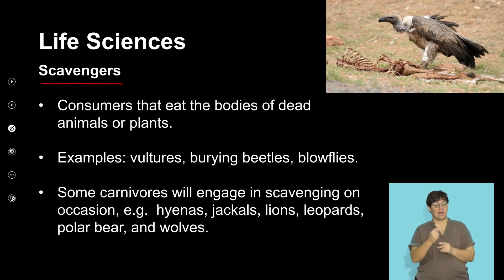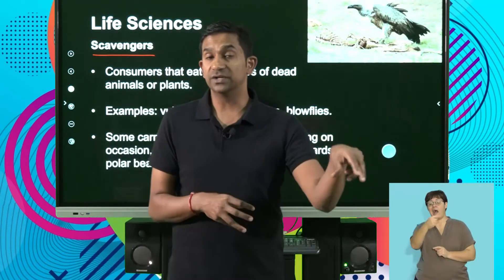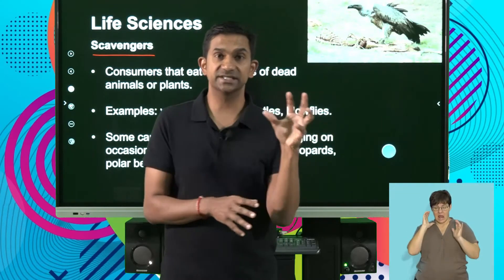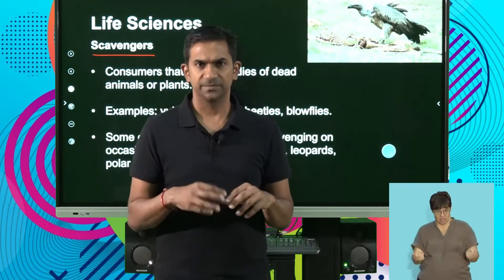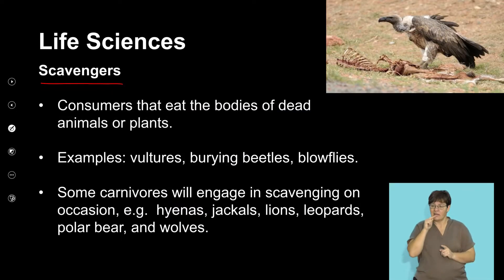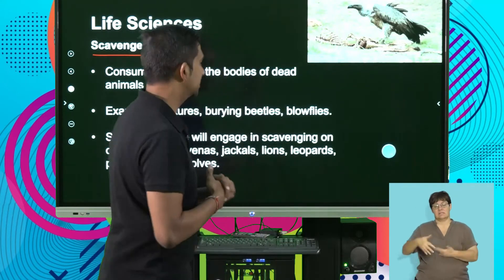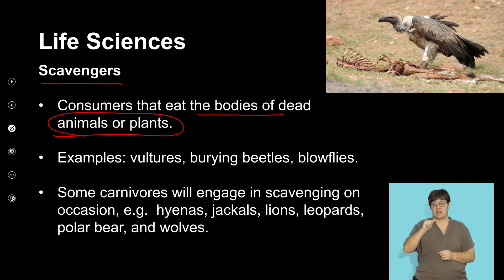Another important group of consumers are called scavengers — organisms that feed off other organisms that have been left behind. Predators kill their prey and consume as much as they can, but the remains of those kills are often left to decompose. Scavengers scavenge the food of other predators. Here we have a vulture that is an important part of the environment, responsible for utilizing some of the nutrients and energy and returning it back into the nutrient cycle. Examples include vultures, burying beetles, and blowflies.